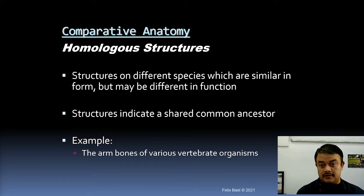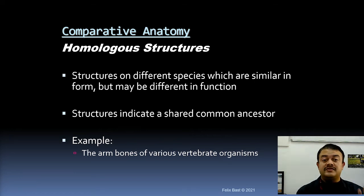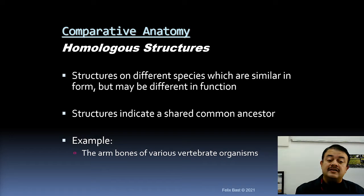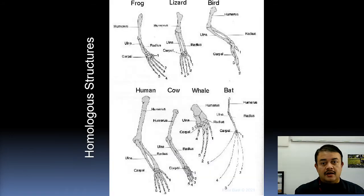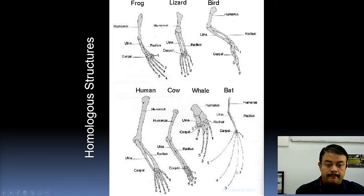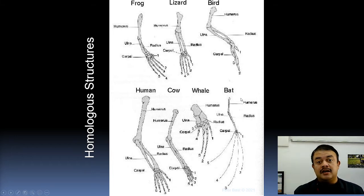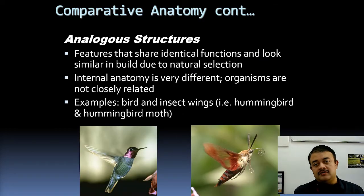Comparative anatomy is used to determine whether structures are homologous or analogous. Homologous structures are those that different species share in similar form, though they may differ in function. They indicate a shared common ancestor. An example is the arm bones of various vertebrate organisms — the radius, ulna, and humerus are common to frogs, lizards, birds, humans, cows, whales, and cats — showing deep homology and a single common ancestor.